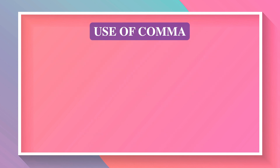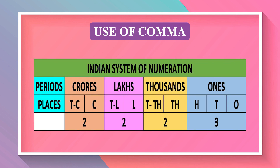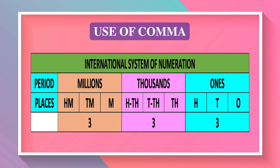We put commas to separate the periods. In the Indian system of numeration, the first period 'ones' has three places: ones, tens, and hundreds. The second period 'thousands' has two places: thousands and 10,000. The third period 'lakhs' has two places: lakh and 10 lakh. The next period 'crores' has two places: crore and 10 crore. So in the Indian system, we put commas from the right as 3, 2, 2, 2.